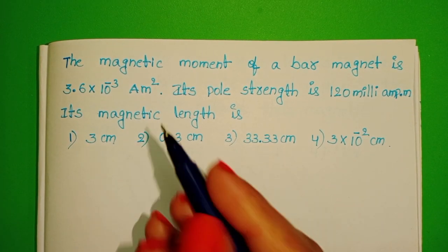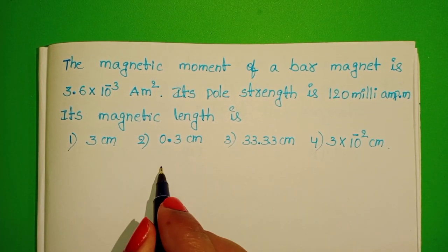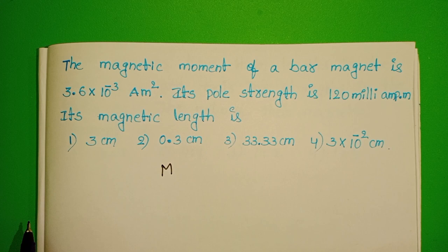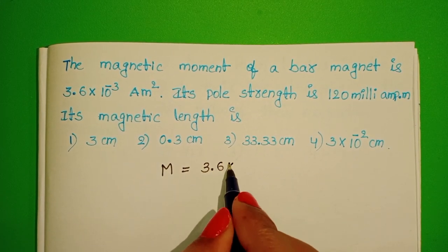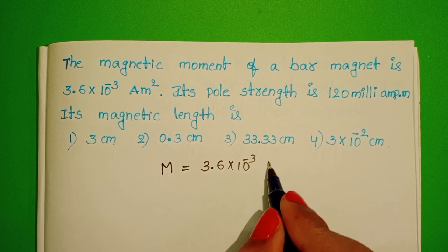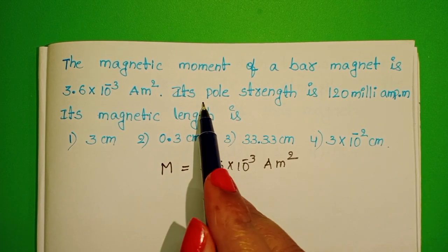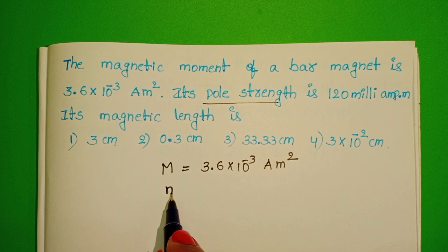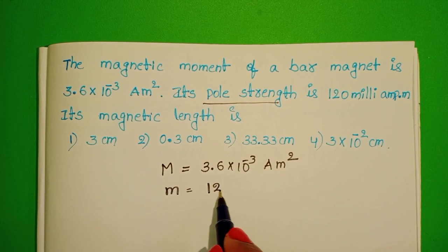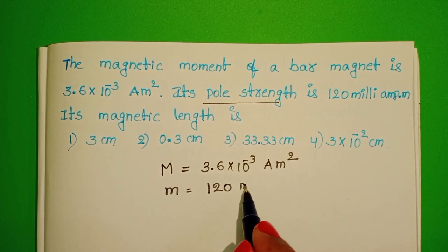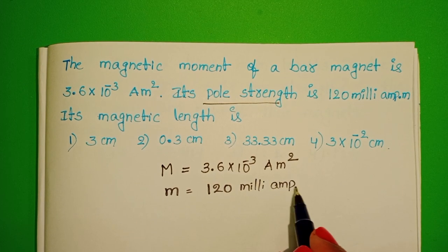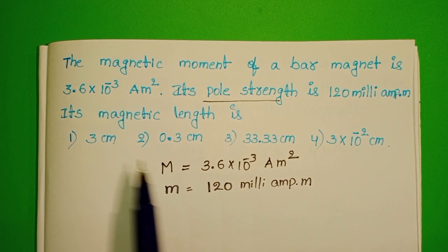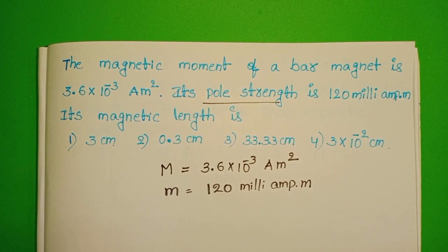In this question we know magnetic moment, denoted with capital M. Magnetic moment equals 3.6 × 10⁻³ ampere meter square. Pole strength is denoted with small m. Pole strength equals 120 milliampere meter. We have to find out the magnetic length.